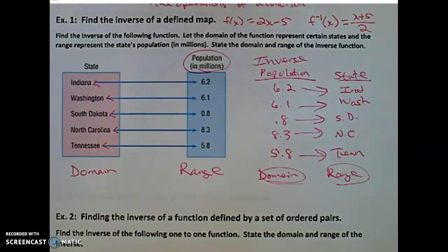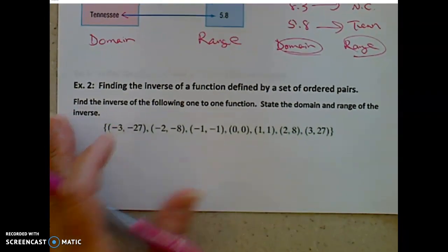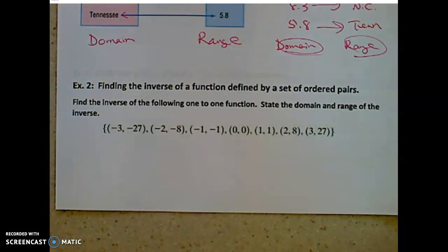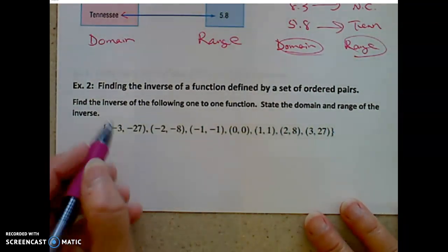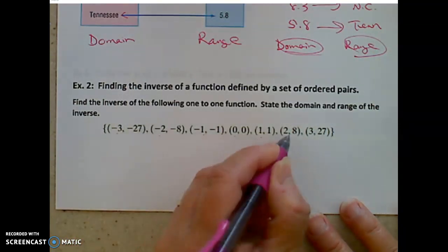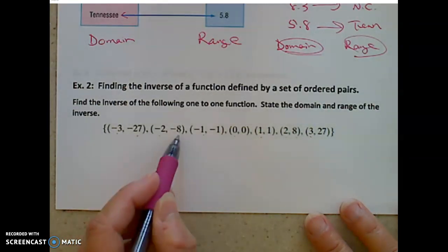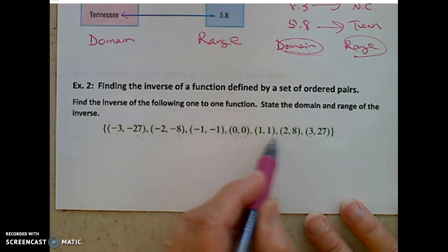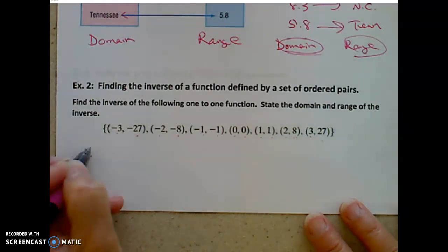We can look at functions in another way — we can represent a function. Let's say this is a function: for each input there is only one output, and the reverse is true as well — for each output there is exactly one input. So this is a one-to-one function.